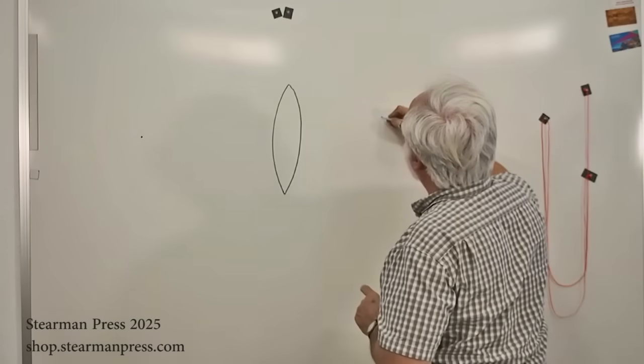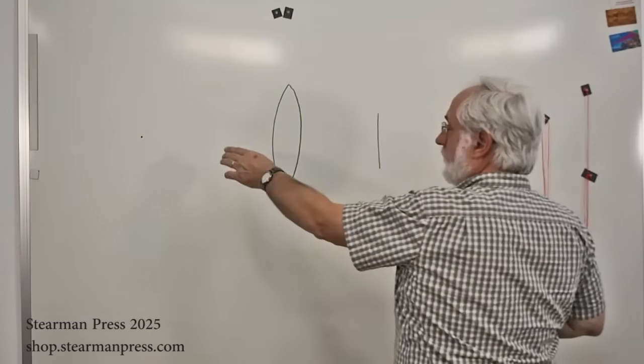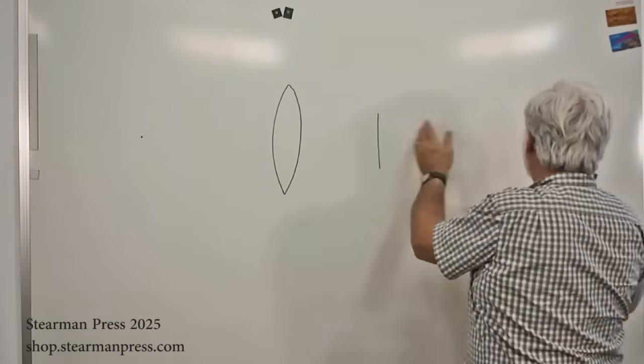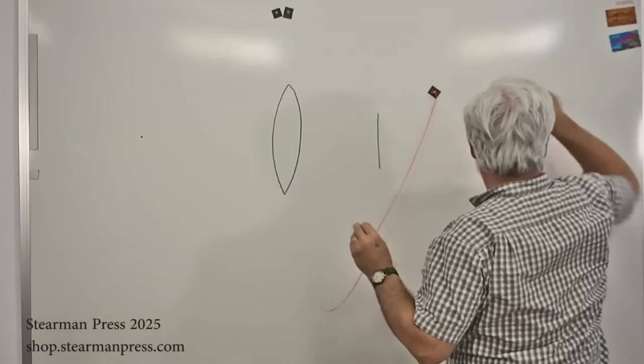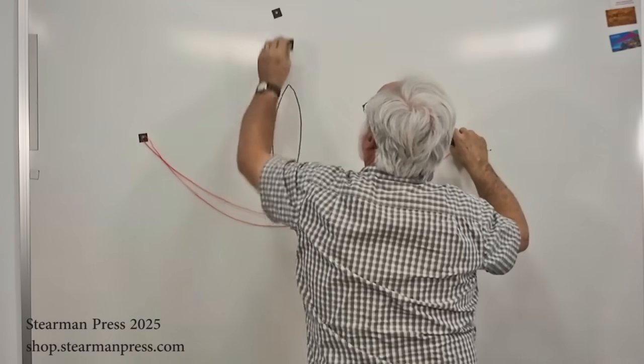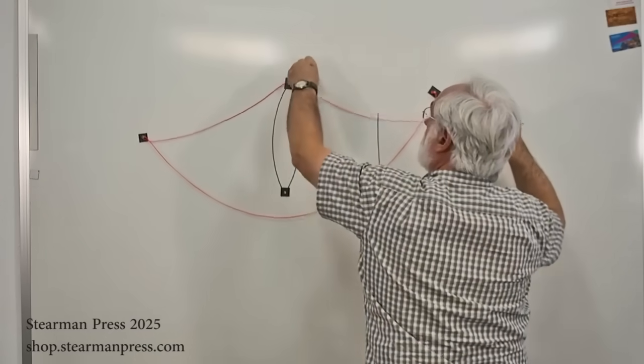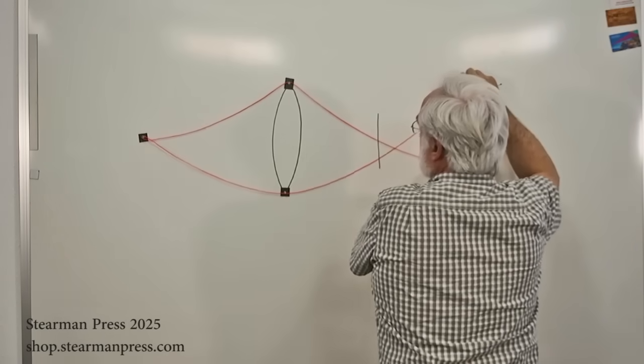And we'll put a film plane in here. And the light from the point source is going to get focused on the film plane. And to show that, this is where we get pretty sophisticated. Probably should file a patent on this fancy visual aid of ours. We'll deal with that later.